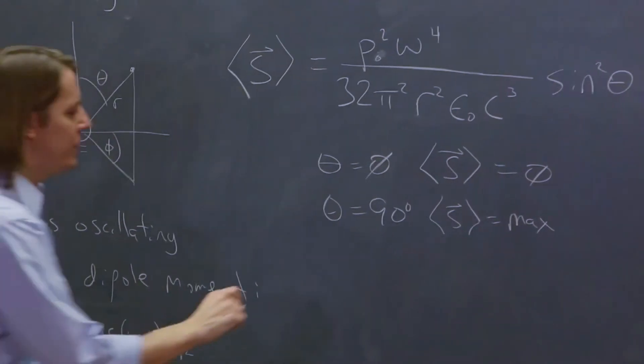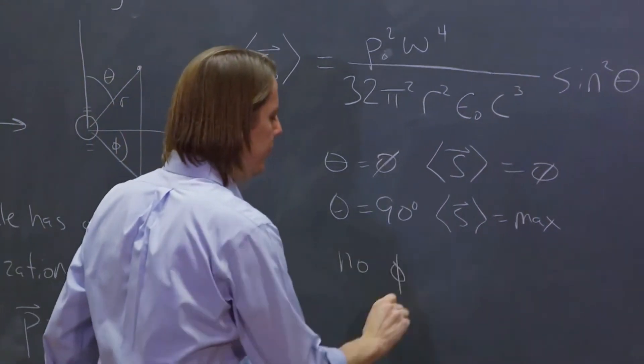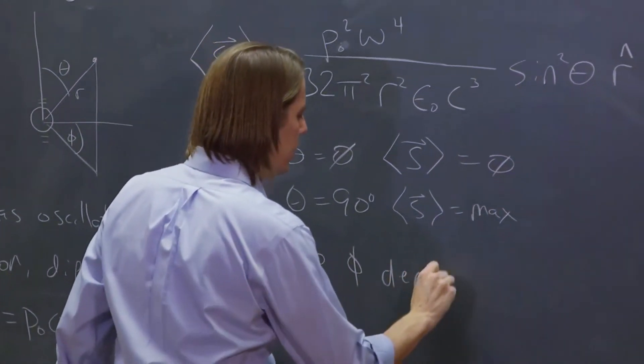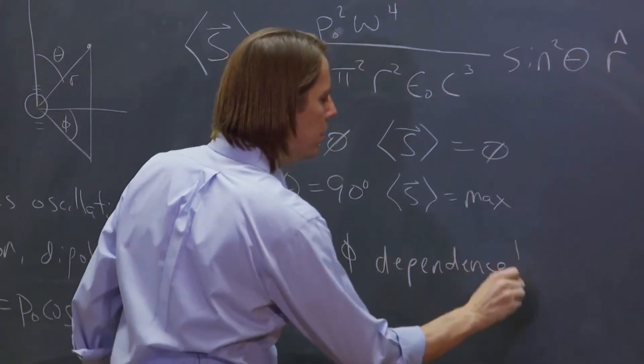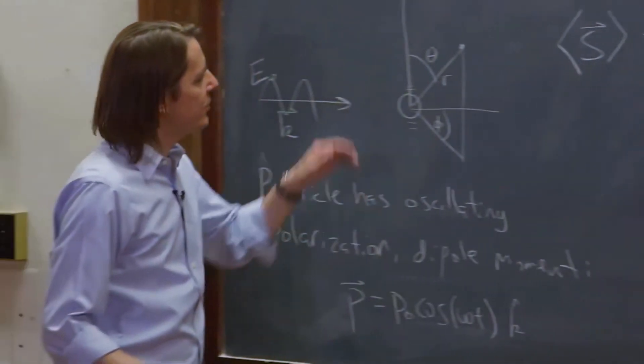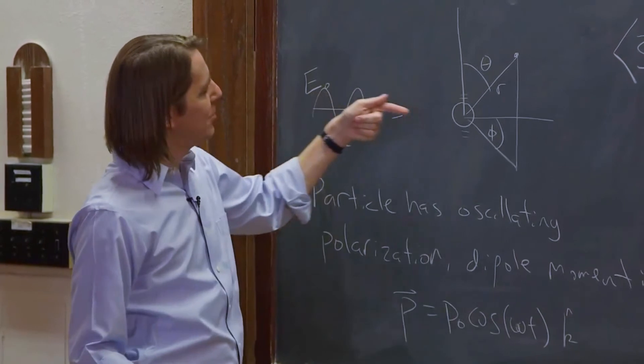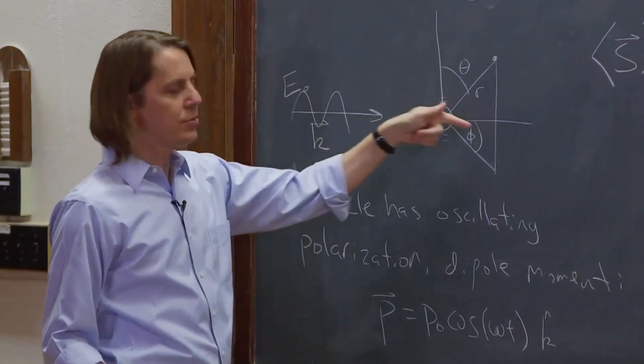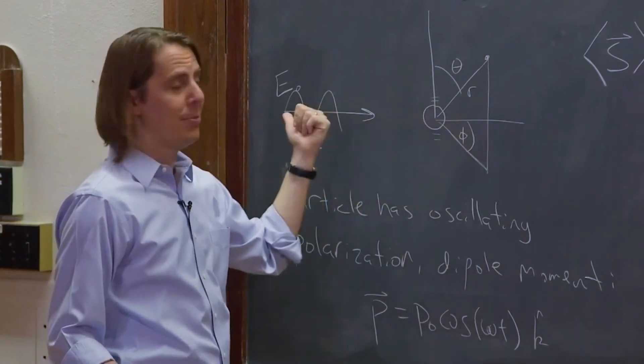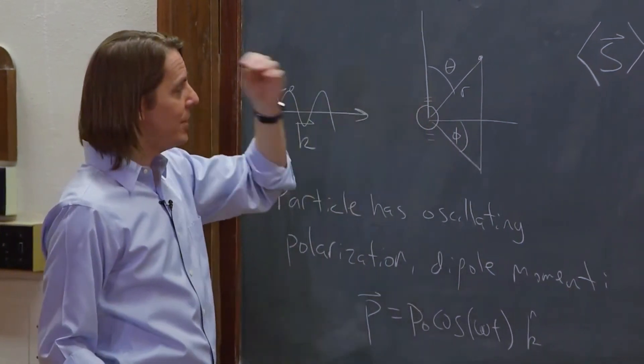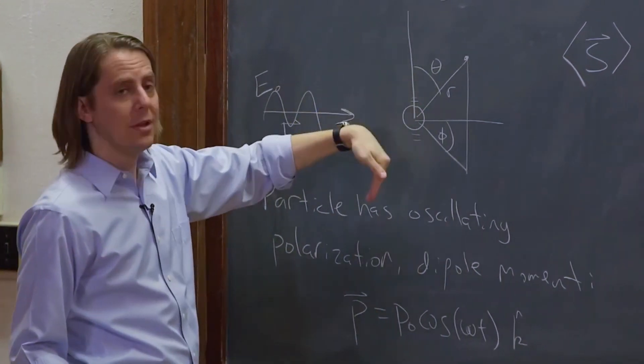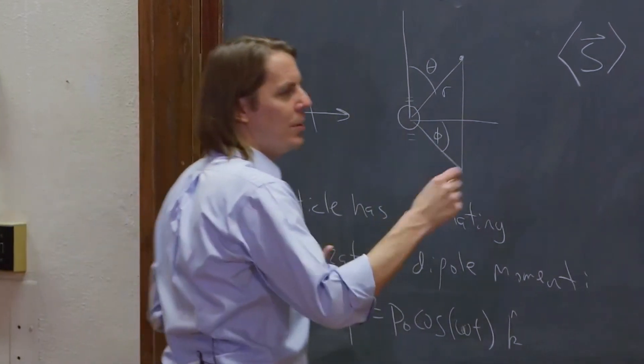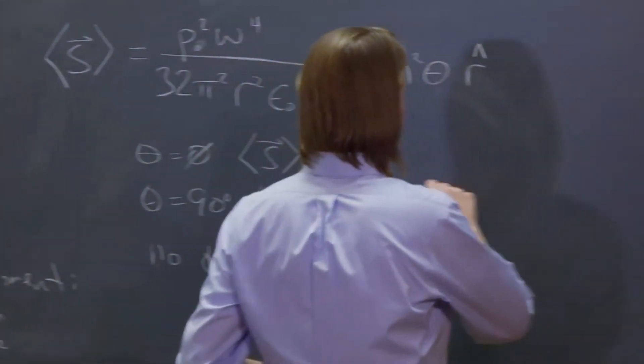But then there's no azimuthal dependence, no phi dependence. So what you can see there is that the plane wave came in this way, and you get just as much light coming out that way and going into the board as you do straight ahead, and just as much light coming right back. In this simple approximation, all we really care about is the polar angle.